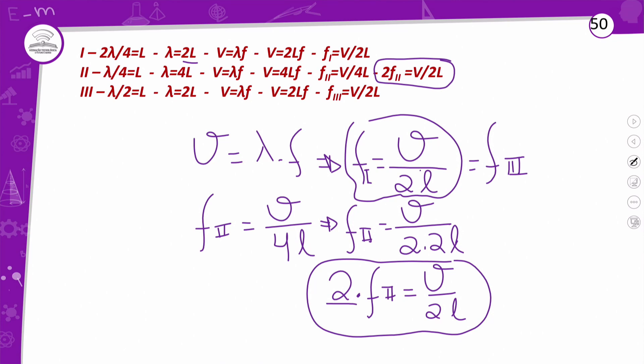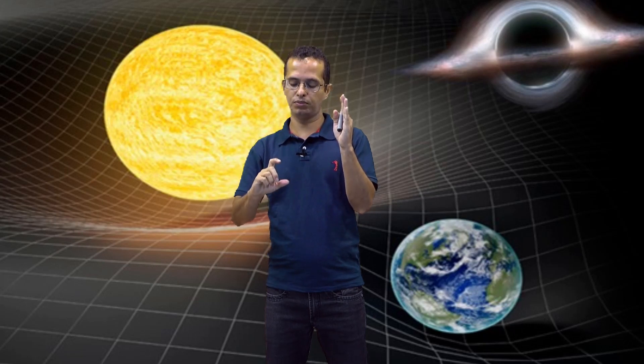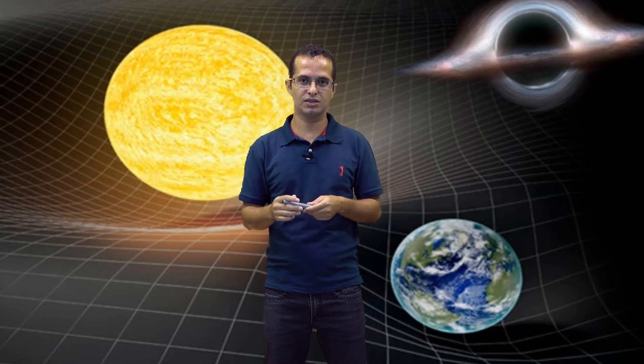Isso é uma questão mais elaborada que você só vai fazer com letras. Toda vez que fizer essas questões, perceba: você tem meio comprimento de onda no tubo 1, meio no tubo 3, e um quarto no tubo 2 — aí aparece a diferença. Não tem número para fazer conta, é só uma relação. Nos vemos na próxima aula. Tchau!